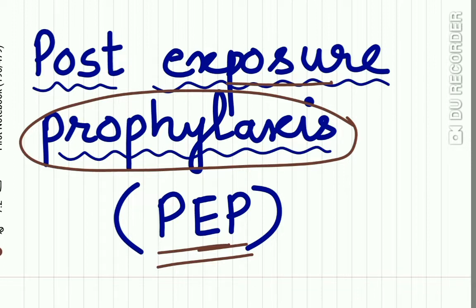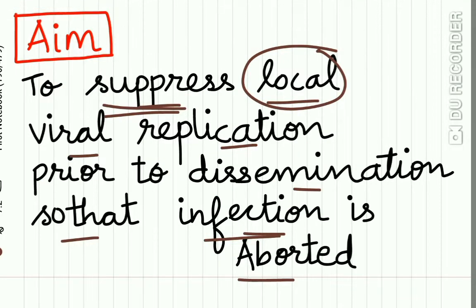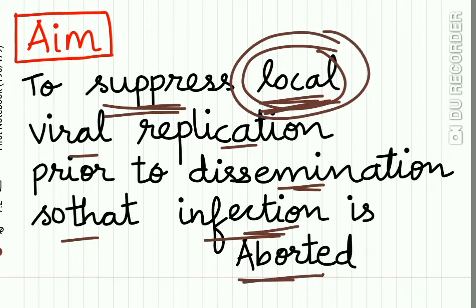Let us study the post-exposure prophylaxis, or PEP, of HIV infection. PEP is the treatment which should be followed after exposure to HIV infection. The aim of PEP is to suppress local viral replication prior to dissemination so that infection is aborted — suppression is done at a local level.